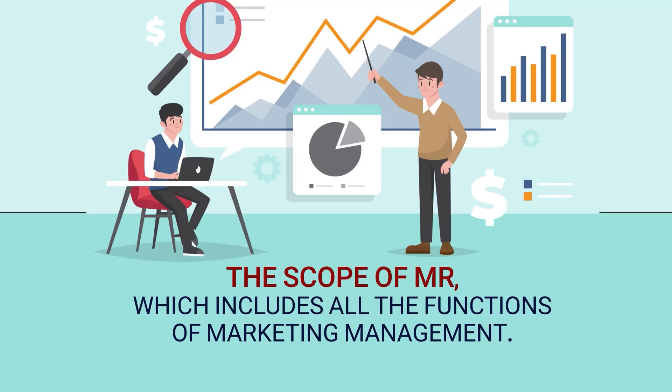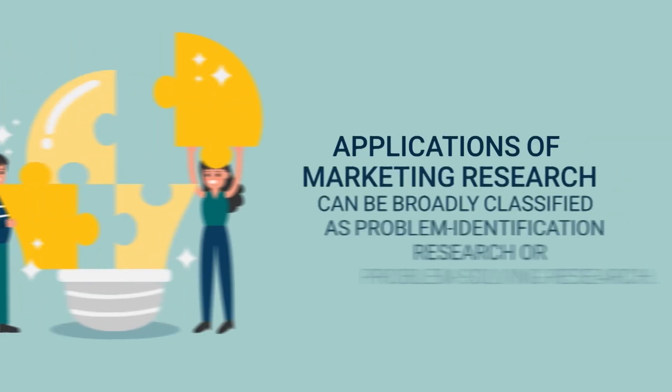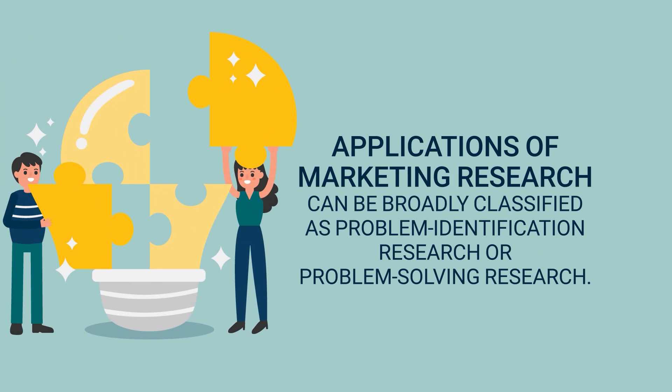We have taken the case of organic fruit and vegetable seller Mr. Mohan, who was struggling to sell his organic products. With the help of this case situation, we discussed the scope of marketing research, which includes all the functions of marketing management. We have further discussed that applications of marketing research can be broadly classified as problem identification research or problem solving research.